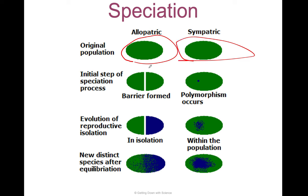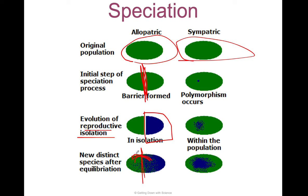Same with the sympatric side. In allopatric, a barrier is formed — let's say a giant landslide comes in and forms a physical barrier. In isolation, one side of the barrier will form a new species out of reproductive isolation. They're only reproducing with each other. After maybe this barrier gets cleared up, the new distinct species intermingles with the original, but they cannot mate — it's a new distinct species.